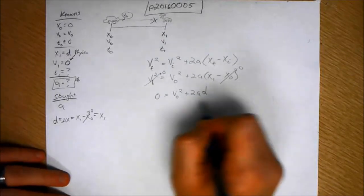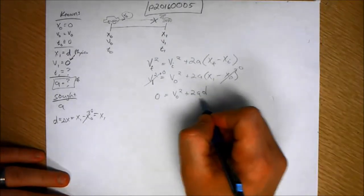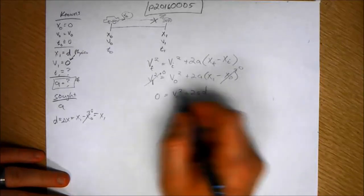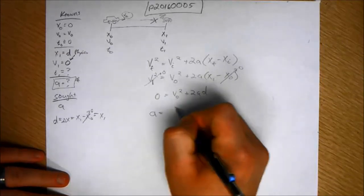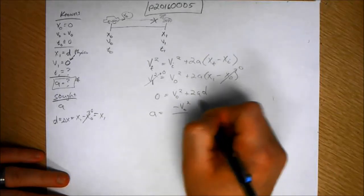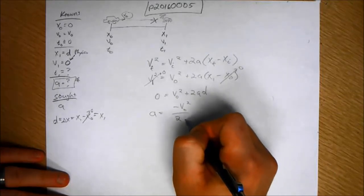So if we solve in terms of A, A is going to equal negative V-naught squared, because I'm moving that to the other side, over 2D.